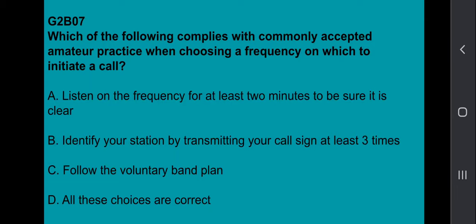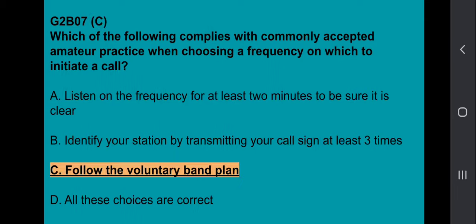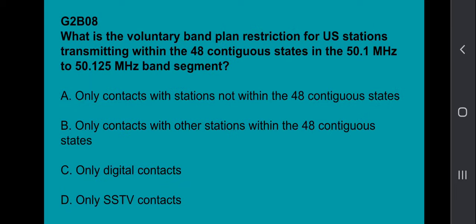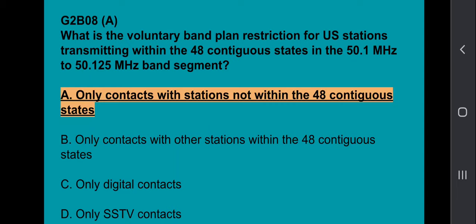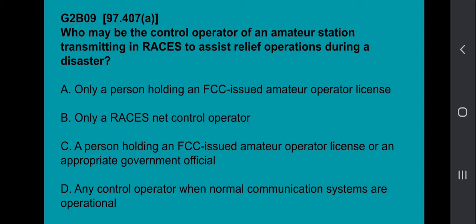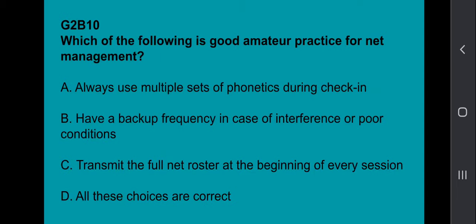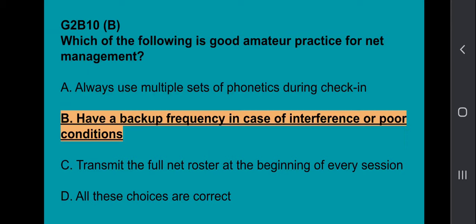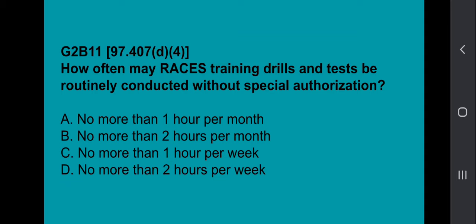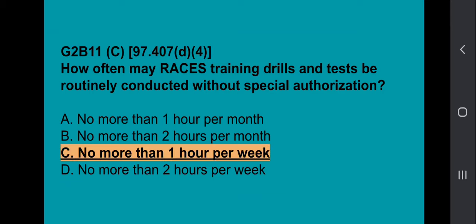G2B07: Which of the following complies with commonly accepted amateur practice when choosing a frequency on which to initiate a call? Follow the voluntary band plan. G2B08: What is the voluntary band plan restriction for U.S. stations transmitting within the 48 contiguous states in the 50.1 MHz to 50.125 MHz band segment? Only contacts with stations not within the 48 contiguous states. G2B09: Who may be the control operator of an amateur station transmitting in RACES to assist relief operations during a disaster? Only a person holding an FCC-issued amateur operator license. G2B10: Which of the following is good amateur practice for net management? Have a backup frequency in case of interference or poor conditions. G2B11: How often may RACES training drills and tests be routinely conducted without special authorization? No more than one hour per week.